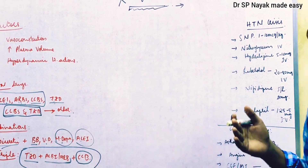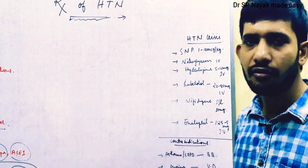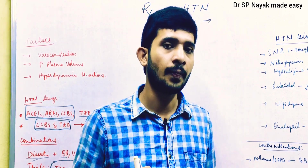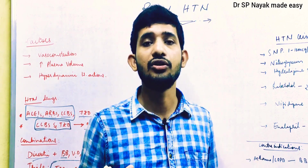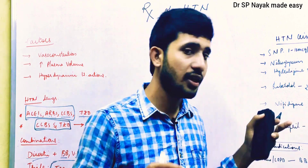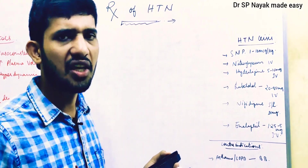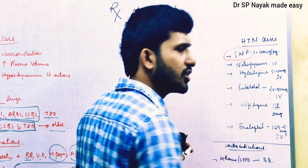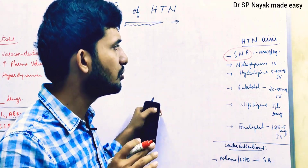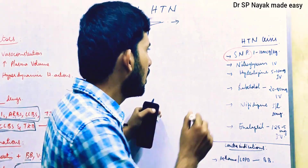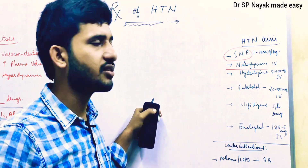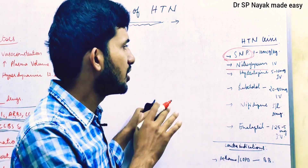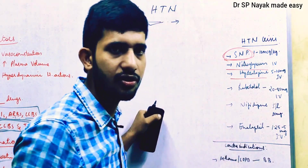Hypertensive crisis carries a high risk of cerebral hemorrhage and stroke, and is treated with IV formulations with rapid onset of action. Sodium nitroprusside is a drug of choice in hypertensive crisis, given at 1–10 mcg/kg IV. Nitroglycerin is also available in IV form. Hydralazine 5–10 mg IV is a drug of choice in most hypertensive crisis patients.